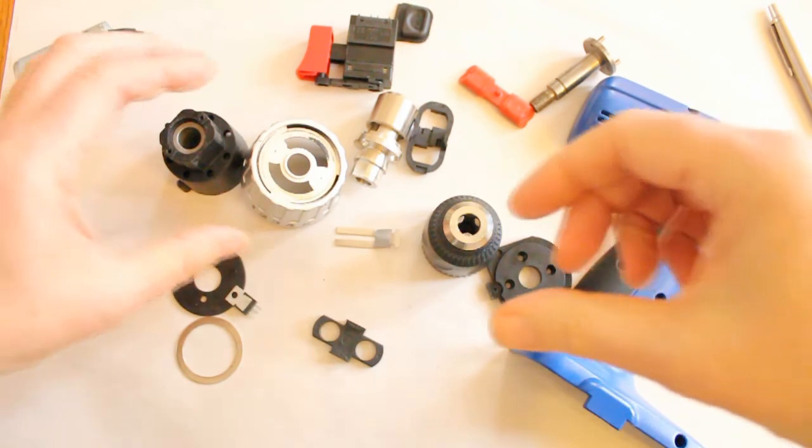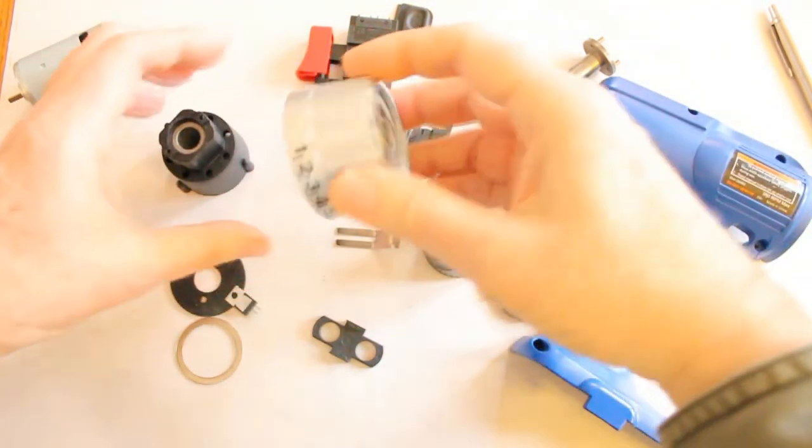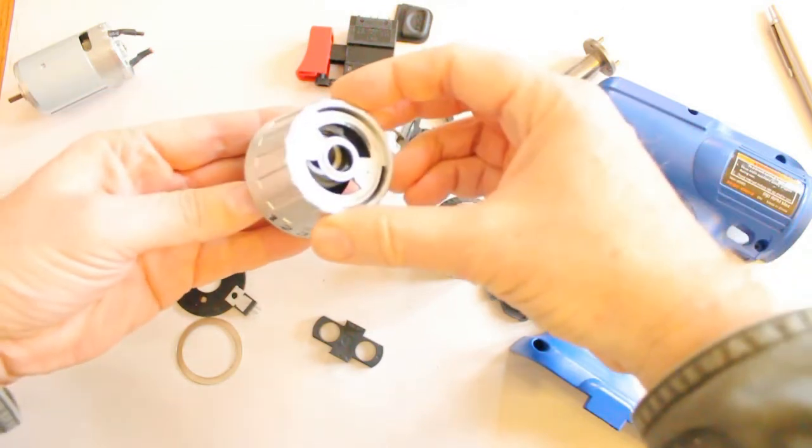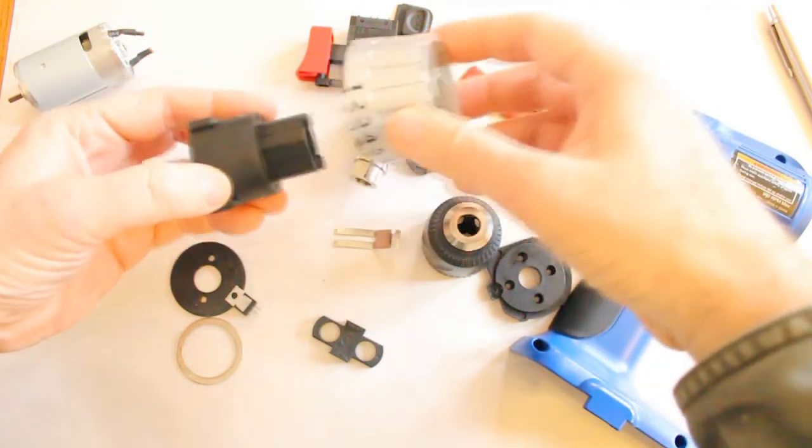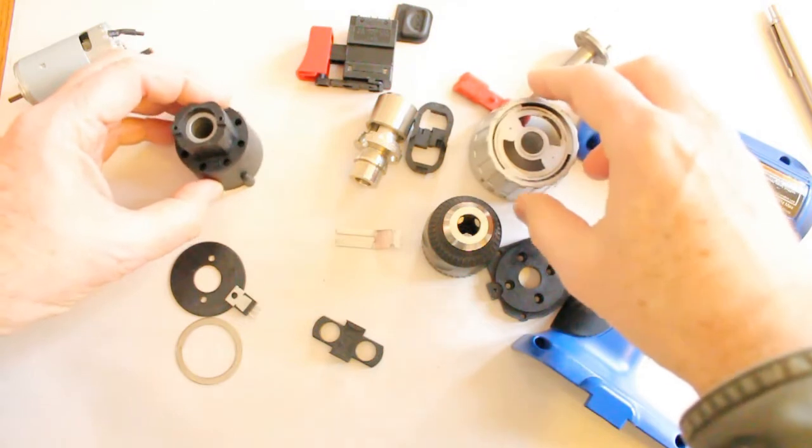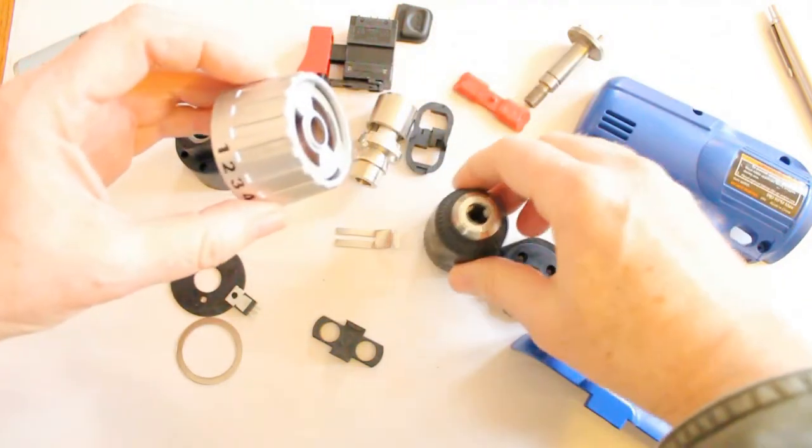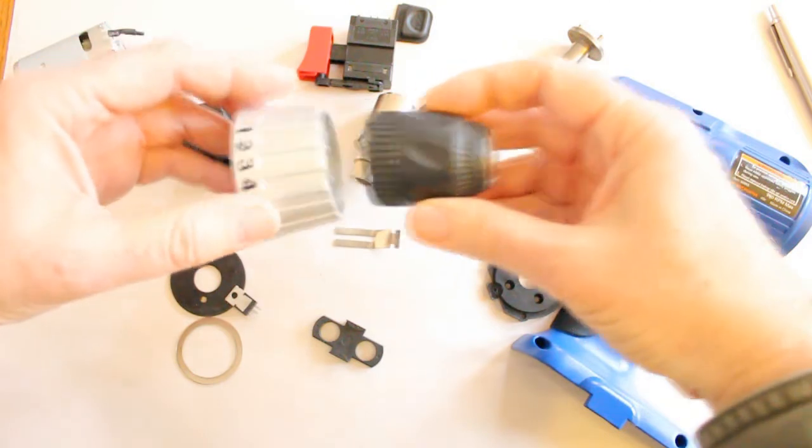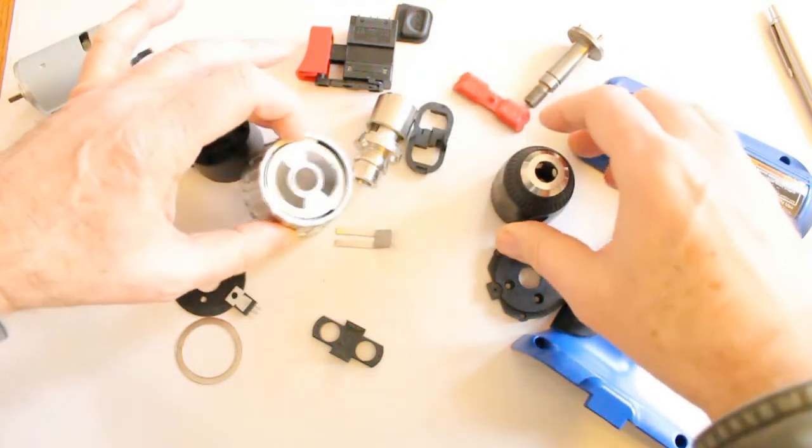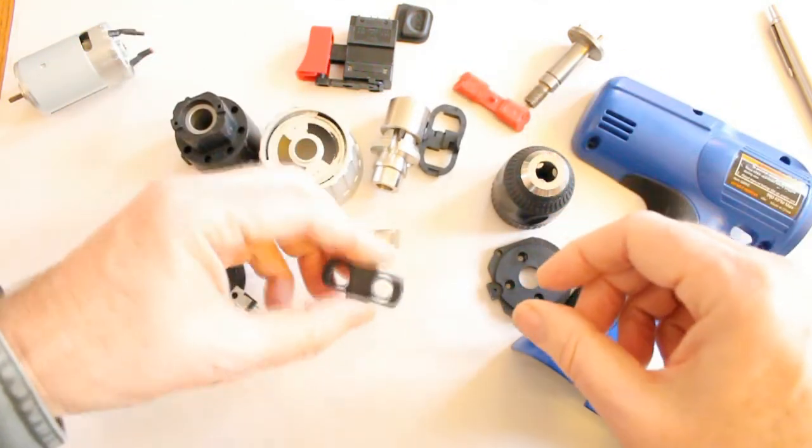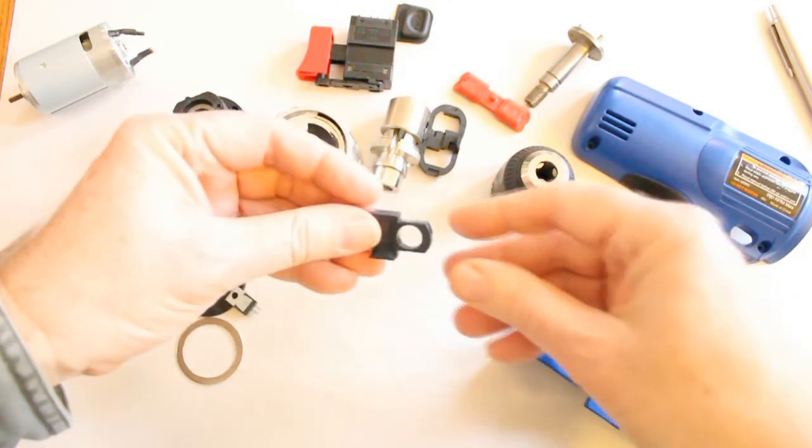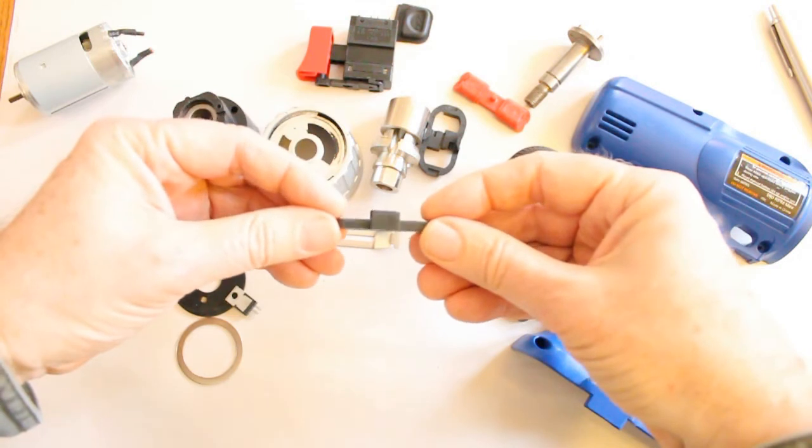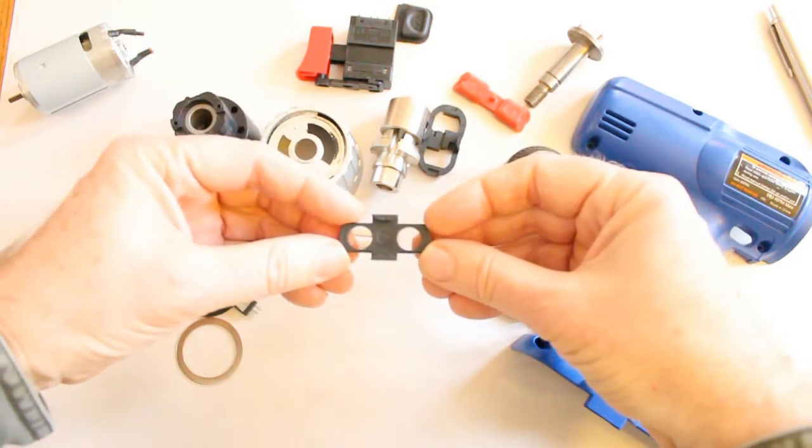We started by mentioning function and symmetry. In reality, symmetry is often also part of the function. For example, the function of many of the revolve parts in the drill is to rotate or to enclose rotating parts. Both kinds of symmetry are functional because designing symmetric parts makes them easier to manufacture and easier to assemble. For example, they can go in the assembly in either direction.